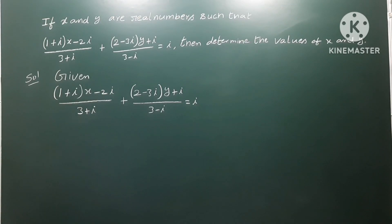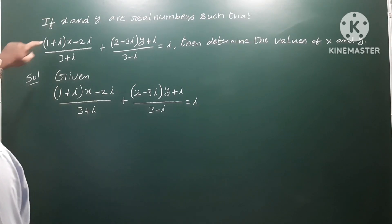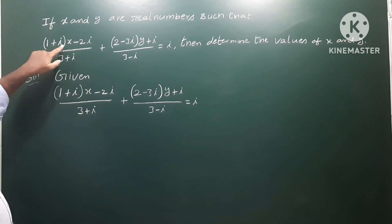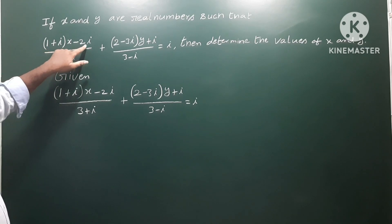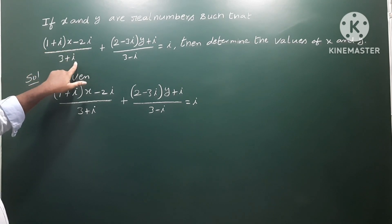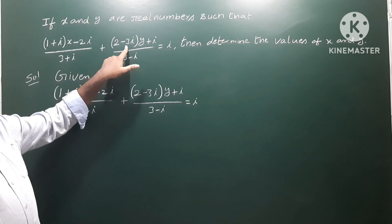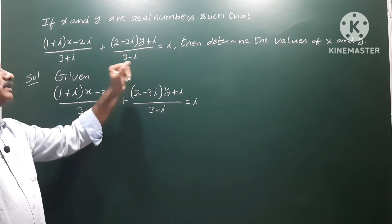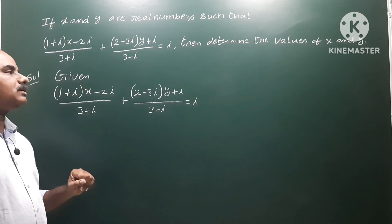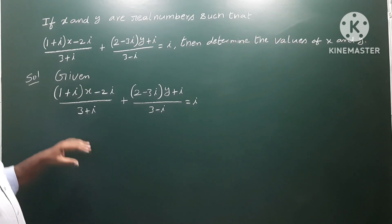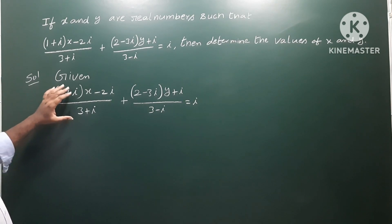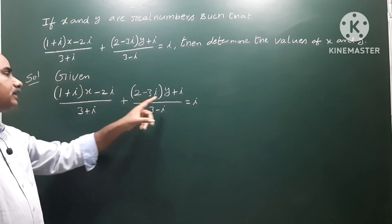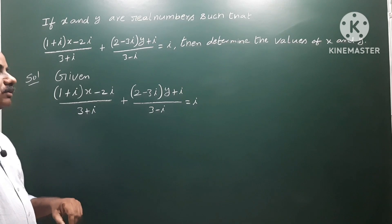If x and y are real numbers such that (1+i)(x-2i)/(3+i) + (2-3i)(y+i)/(3-i) = i, determine the values of x and y. We need to simplify the condition and find the values of x and y.